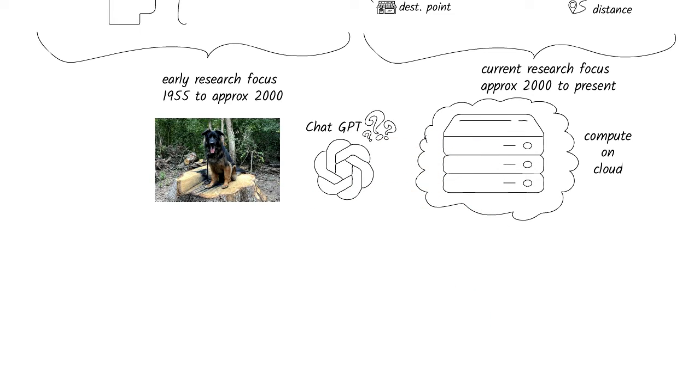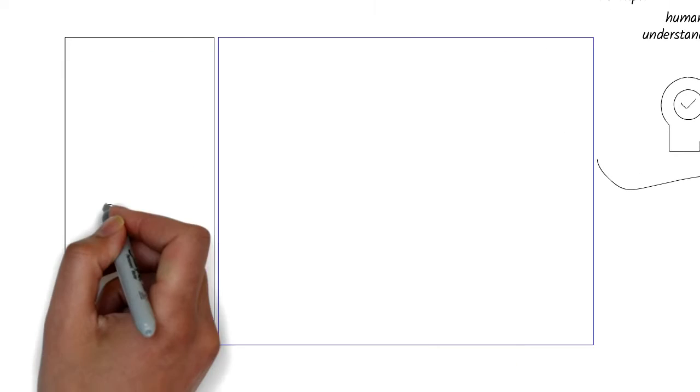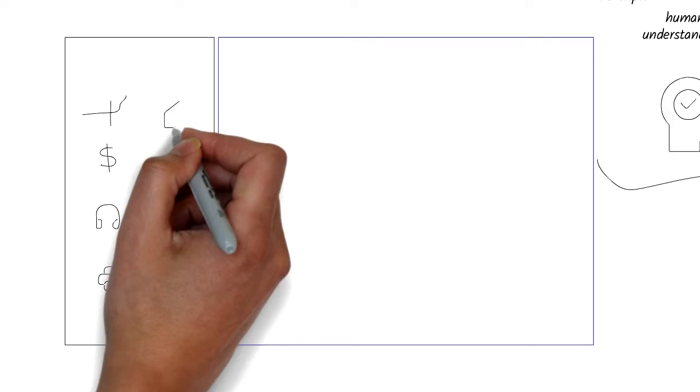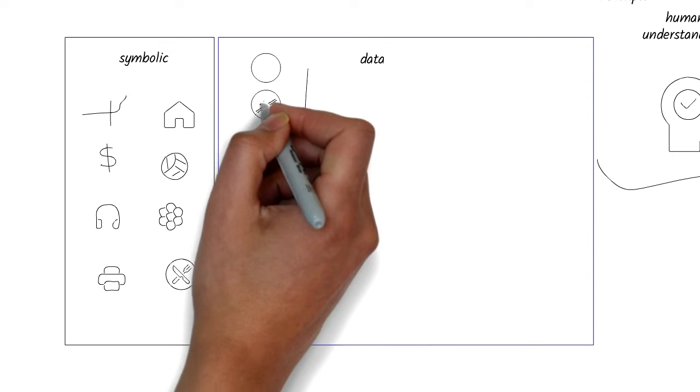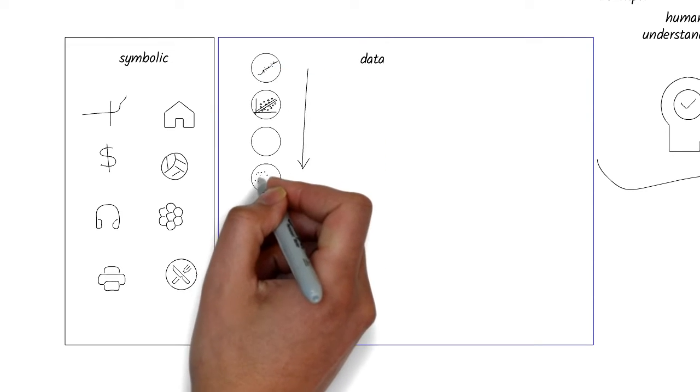So where does generative AI, such as ChatGPT, fit into all this? We already know that AI has two ways to represent the real world: using symbols and using data. The data representation is through a process called machine learning.